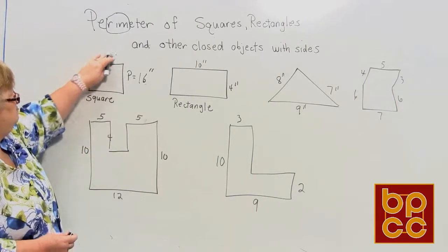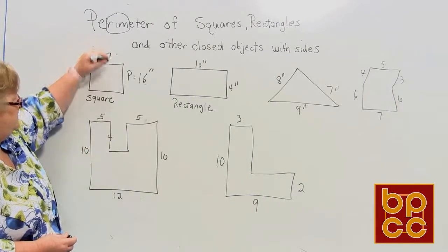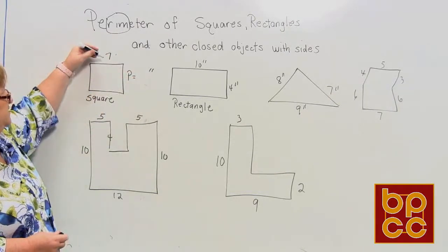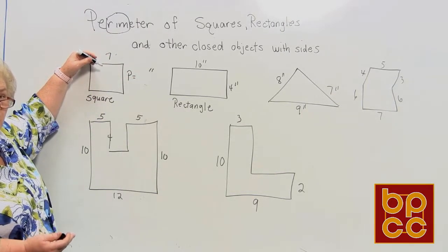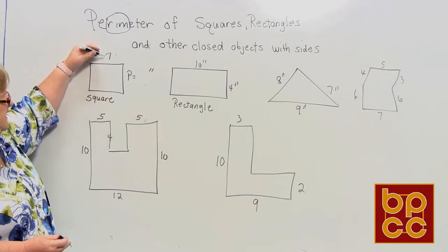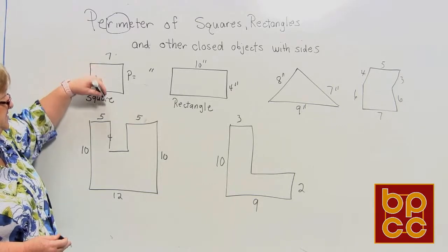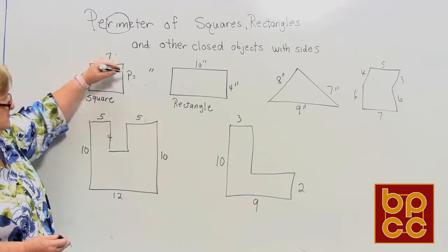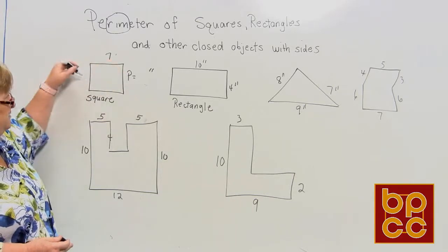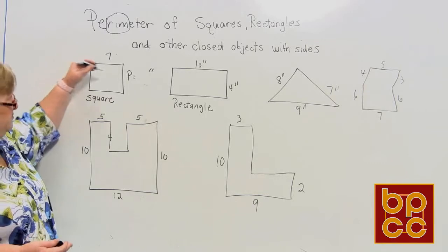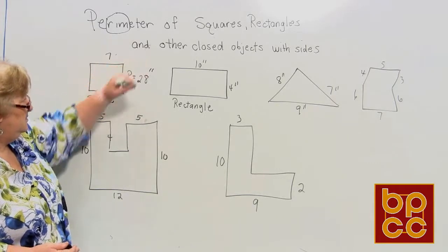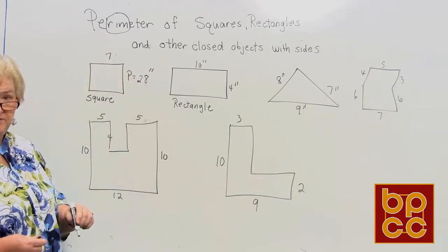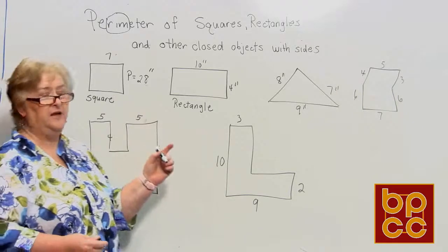If the side had been seven inches, we can say 7 times four equals 28 inches, or we can add 7 and 7 to get 14, then 7 and 7 again for another 14 — either way we still get 28 inches.